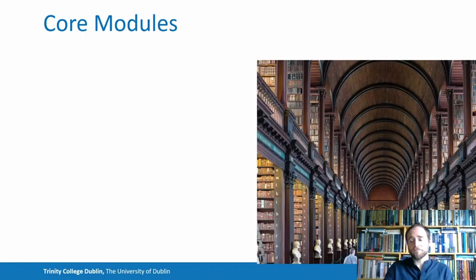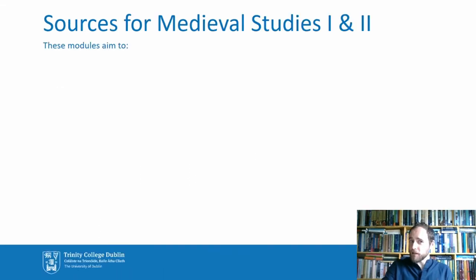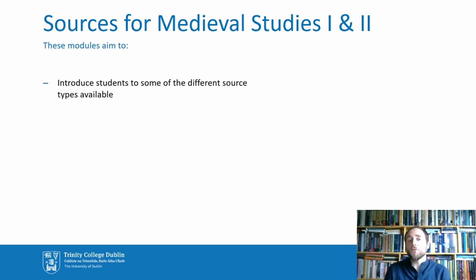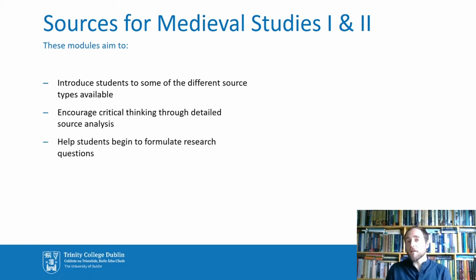Let's look at the core modules. During the course of your degree, you're required to take four of these: Sources for Medieval Studies 1, Sources for Medieval Studies 2, Introduction to Medieval Books and Documents, and Reading Medieval Books and Documents. Broadly speaking, the aims of the sources modules are to introduce you to the different types of source material available for the Middle Ages and to encourage you to think about how to analyse these sources in different ways. This really equips you with the skills necessary to undertake your own independent research and begin formulating research questions — the building blocks for researching and writing your dissertation.